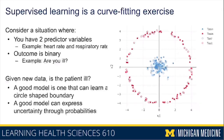A good model is one that could learn a circle-shaped boundary — drawing a circle right between where the blue points are and where the red points are. A good model would also be able to express some uncertainty about its predictions through probabilistic reasoning.